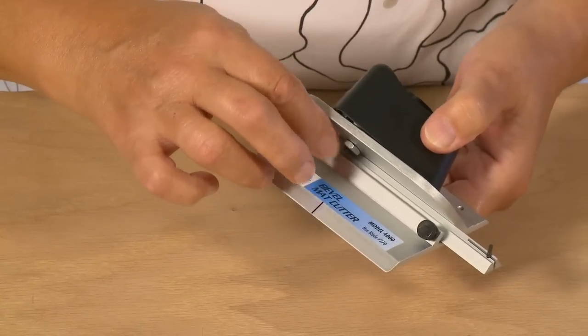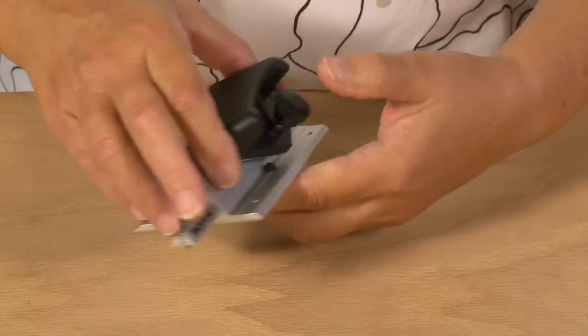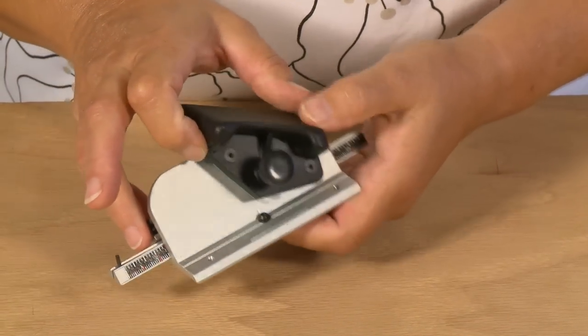To install the blade, first loosen the retaining screw on the back of the cutting head and rotate the blade holder all the way up.